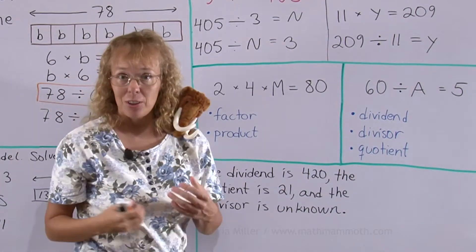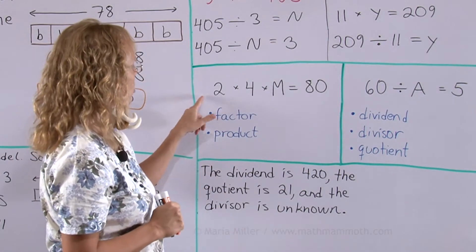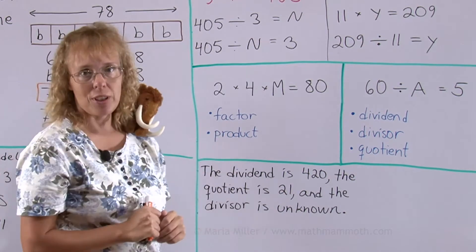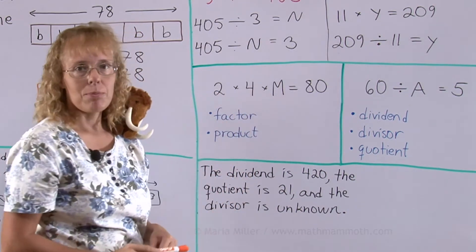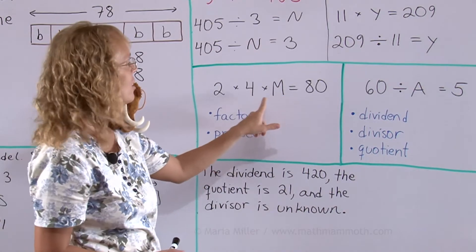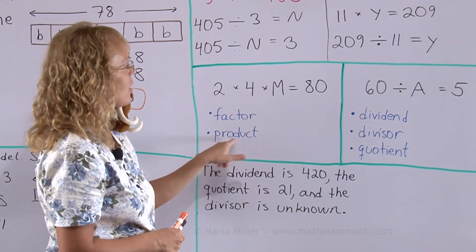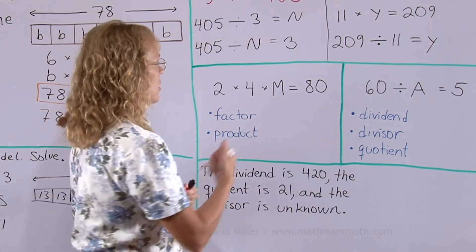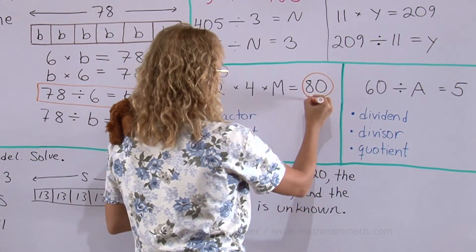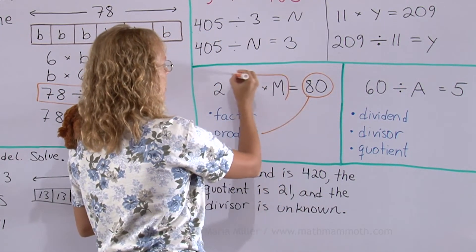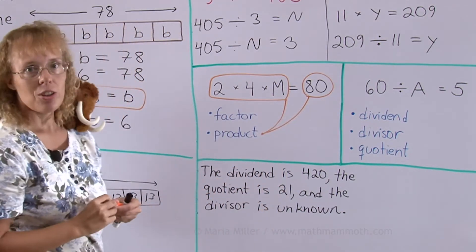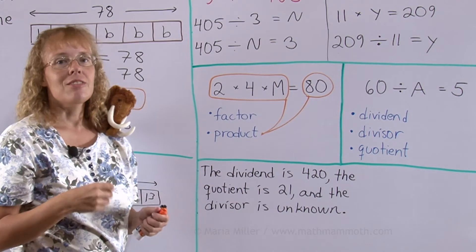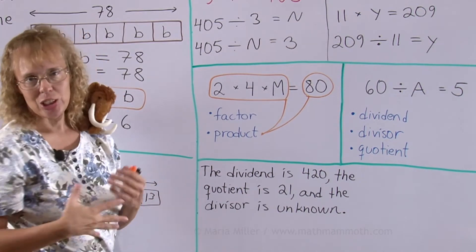Now let's review the terminology. In multiplication the numbers being multiplied, these individual numbers here that are being multiplied, so M is a factor. Four and two are factors too. Product is the answer. This here is the product. But also this expression here is also called the product. You can think of it as the product written or product not yet solved.